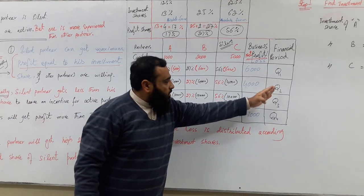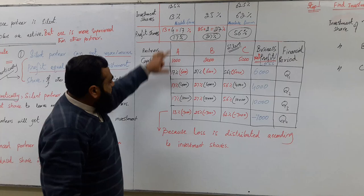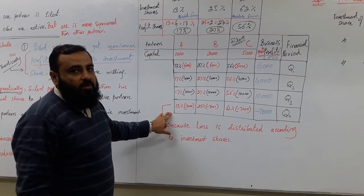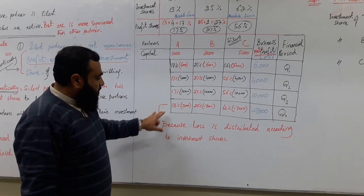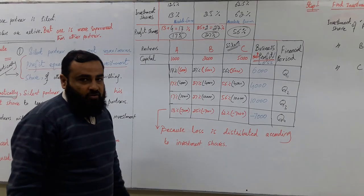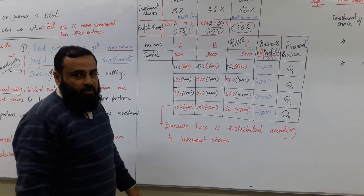Now we have distributed profit for quarter 1, quarter 2, quarter 3 according to these profit ratios. And what about the loss? As you know, loss will be distributed according to investment shares, not according to profit shares. So this is the Case 4 situation. Thank you.